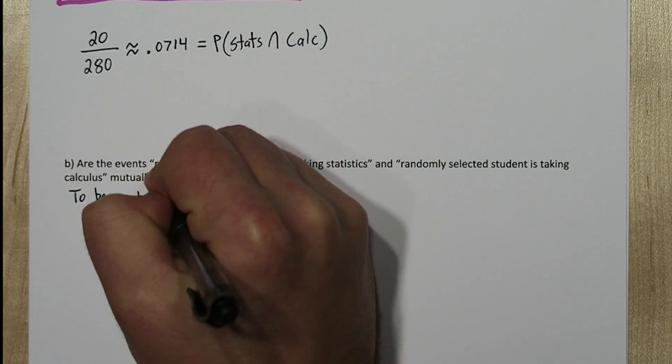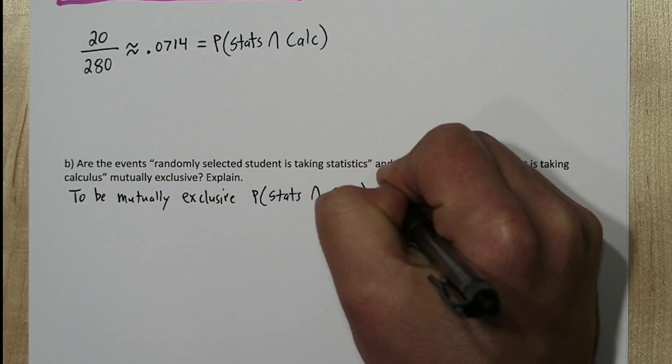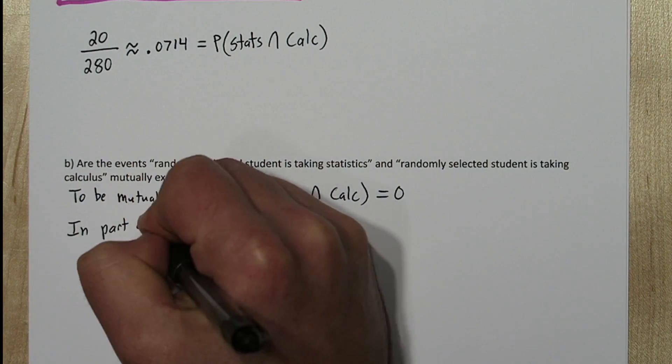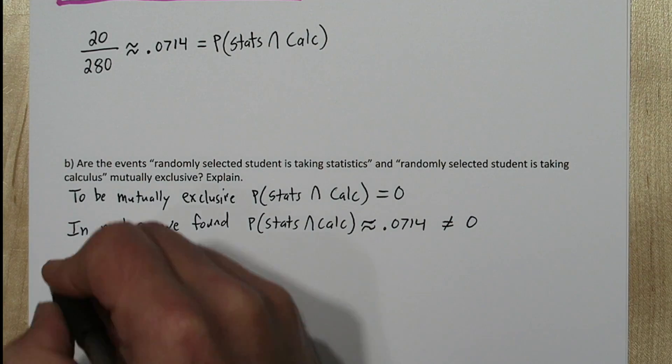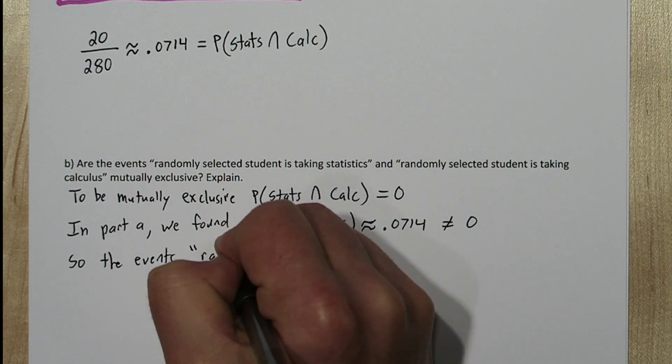To be mutually exclusive, the probability of taking stats and calculus has to equal zero. But in part A we found that probability was about 0.0714, so not zero.